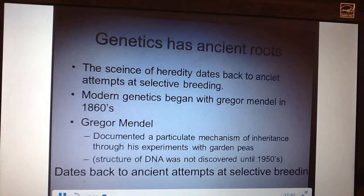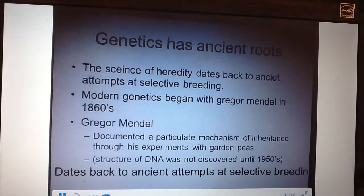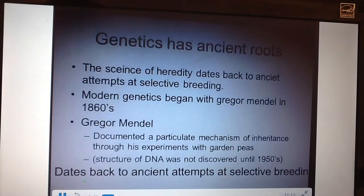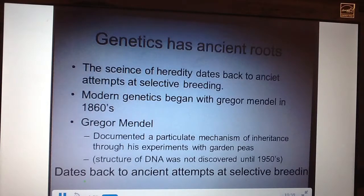If we were to talk about genetics or inheritance, we have to go back several generations in time and realize that genetics has ancient roots. The science of heredity goes back to literally the oldest attempts of selective breeding. Modern genetics as we know it — including DNA, even though DNA wasn't discovered until the 1950s — is actually given credit to Gregor Mendel, an Austrian monk who demonstrated experiments that proved the inheritance pattern back in the 1860s.